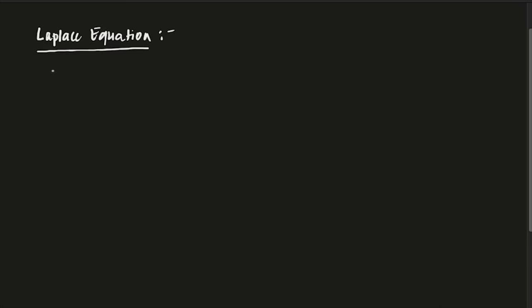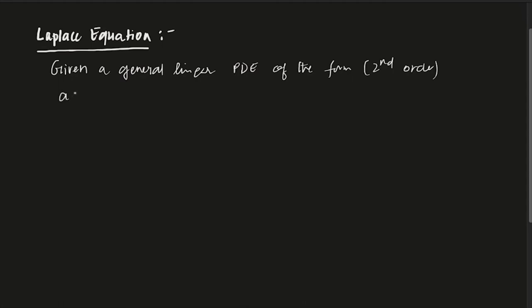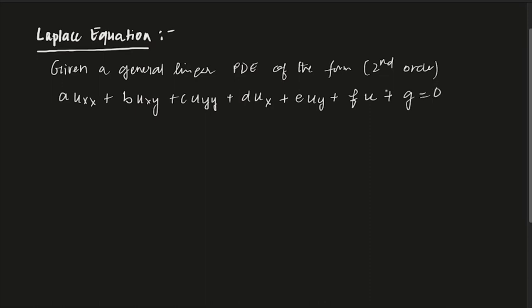The Laplace equation is the most basic second-order equation of elliptic type. If you remember from earlier PDE courses, given a general linear PDE of the form: a·u_xx + b·u_xy + c·u_yy + d·u_x + e·u_y + f·u + g = 0, where all coefficients a, b, c, g are smooth functions in R², that is in C∞(R²).